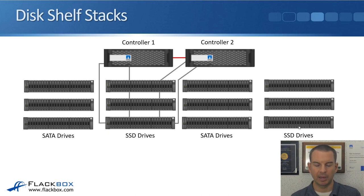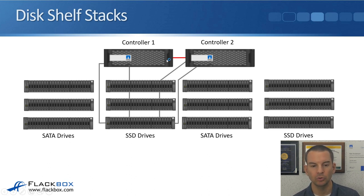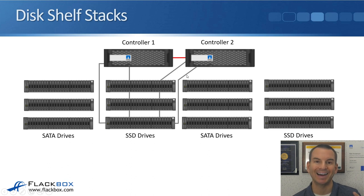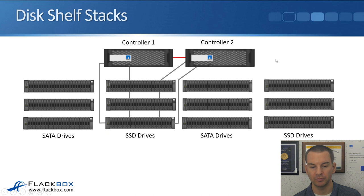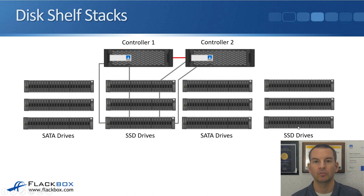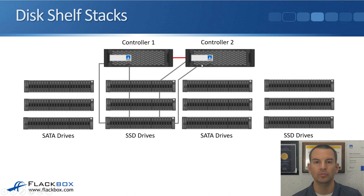When you have a cluster with more than two controllers — say a four-node cluster — the first HA pair (controllers one and two) uses the numbering just described, starting at 0, then 10, 20, 30, with every shelf assigned to that HA pair having a unique ID. But we can reuse the same numbering plan for controllers three and four. Since those shelves are connected to a different HA pair, it's fine to have the same numbers used on another HA pair — only the two connected controllers access those shelves.